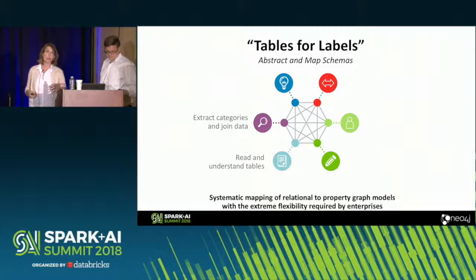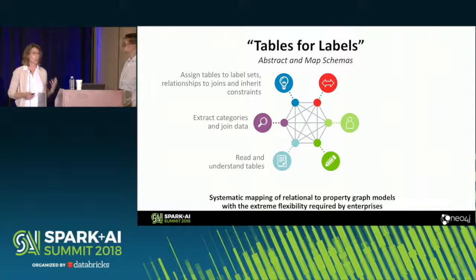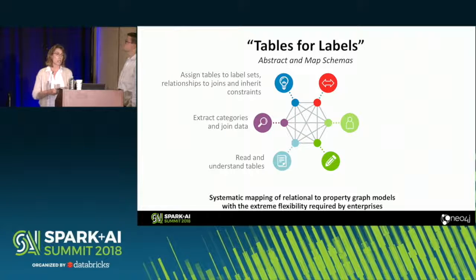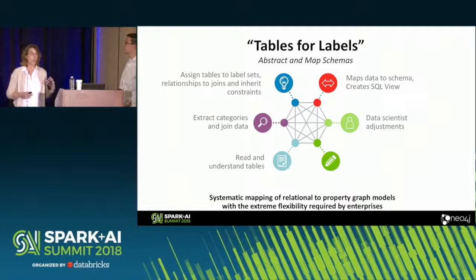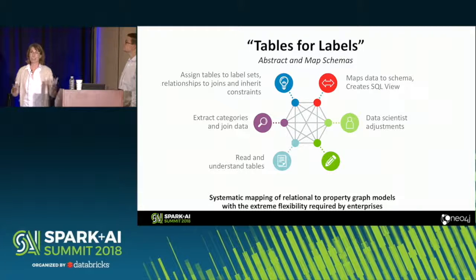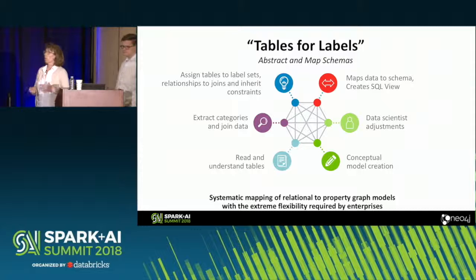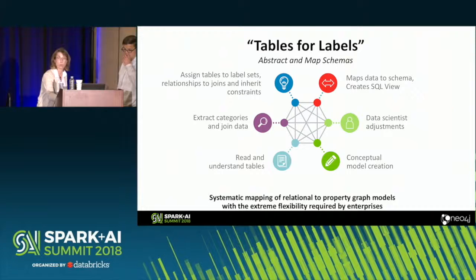It's pretty flexible — you're going to read in your tables, look at the labels, try to extract your categories and join data. You'll assign tables to every label set and end up with some fat tables, and relationships to joins. It will help you map your data to a schema, because you need a schema in Spark, and create some SQL views. There are human elements because no mapping is ever perfect, so you'll need to go through and make adjustments. From there, you create your ERD that can be spawned off into a property graph or back to a relational model. So it's a really flexible model that makes a lot of things much easier so you can abstract without reformatting.